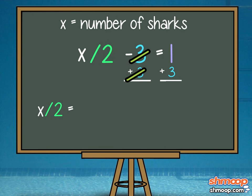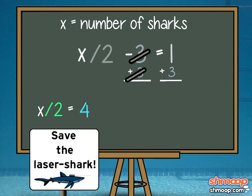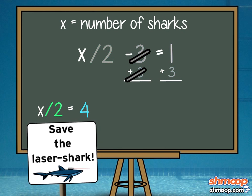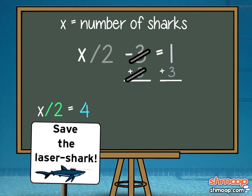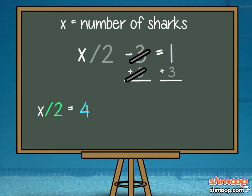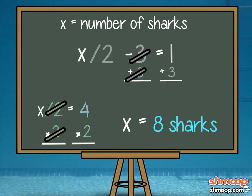Now we have x divided by two equals four. While we can't undo the near extinction of the laser shark, we can undo x being divided by two by multiplying two to both sides. And there you have it, villains and manservants — it's x equals eight.